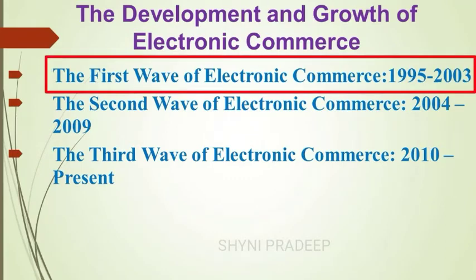The first wave of electronic commerce spans 1995 to 2003. The dot com companies of this first wave were mostly American companies. Their websites were only in English. At that time, network technology was in its beginning stage and the bandwidth and network security were very low.